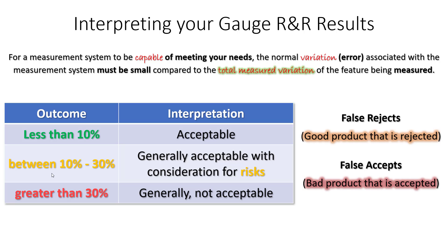The other form of risk is consumer's risk — also called a false accept. Imagine you built a bad product, but because of measurement system variation, that part is actually accepted and passed along to the customer. That is a quality risk. False accepts are a real risk to consider when you have mediocre gauge R&R values in that middle range.